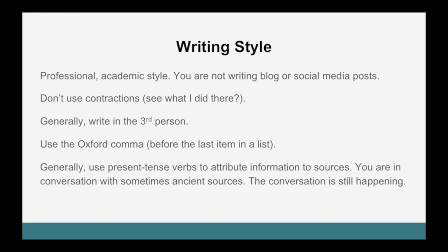As far as the writing style in the Chicago-Turabian style, it is a professional academic style. You are not writing blog or social media posts. Writing for school or for publication is different from writing for the internet. Do not use contractions — simply spell them out; in this case it would be 'do not use contractions.' Generally write in the third person. Some first-person pronouns are appropriate at times in things like introductions, conclusions occasionally, as well as reflection papers. In the Chicago style, use the Oxford comma, which is the comma before the last item in a list. Generally use present-tense verbs to attribute information to sources — you are in conversation with sometimes ancient sources, and the conversation is still happening.